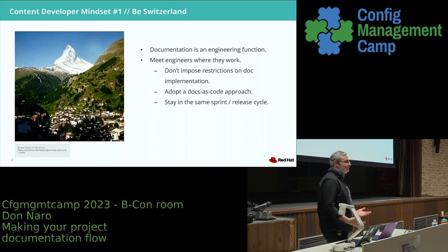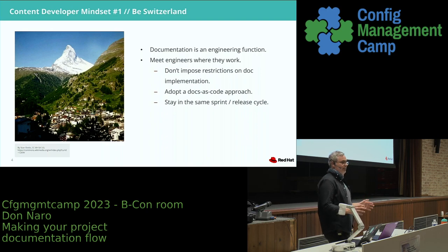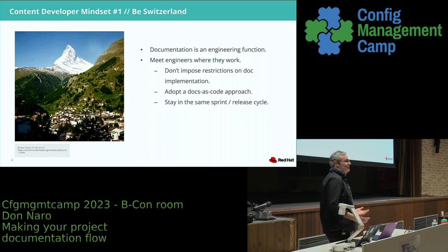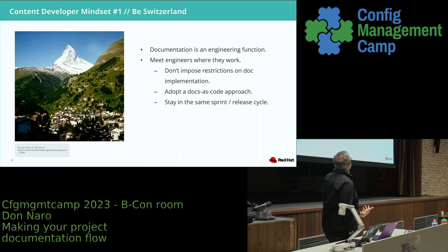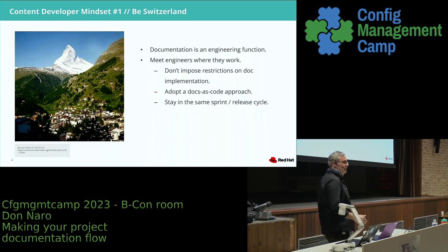Being Switzerland — I think this is the main thing for any content developer or tech writer working with a DevOps engineering team. Don't try to impose things. If you're working with an engineering team, let them decide — if they want to use RST or AsciiDoc, use what the engineering team uses, meet them where they are. I'm a firm believer that documentation is an engineering function and all engineers are technical writers.